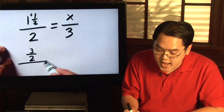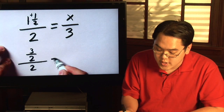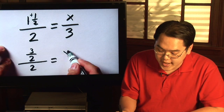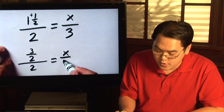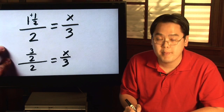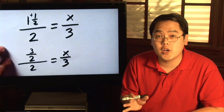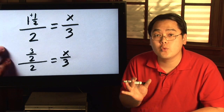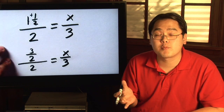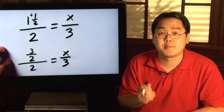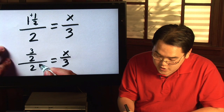So you have three halves over two equals x over three. Now where you go from there is you solve it the same way you would any proportion problem, and that is by cross multiplication.